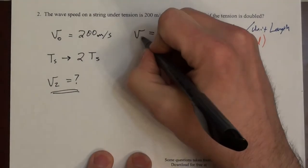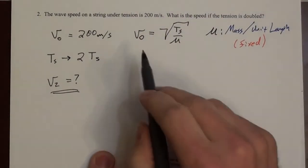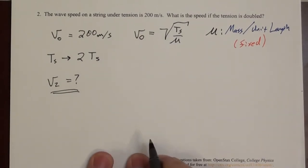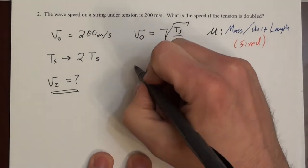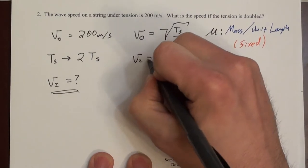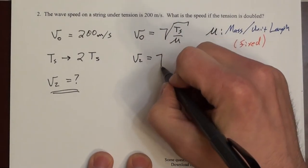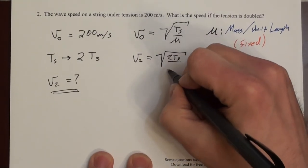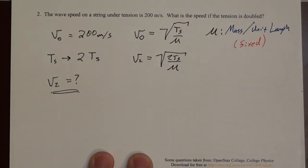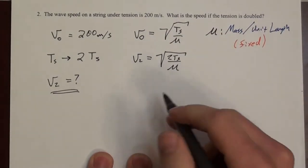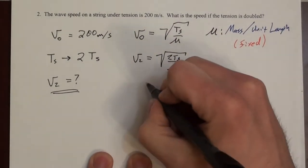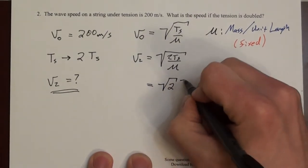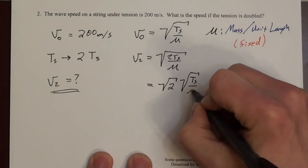Okay, so we could say this is one way to calculate v0. V0 is the square root of Ts divided by mu. So how can we calculate v2? Well, we're replacing Ts with 2Ts. So that's the square root of 2Ts divided by mu. If we factor out this root 2, that'll make this easier to work with: root 2 times the square root of Ts divided by mu.